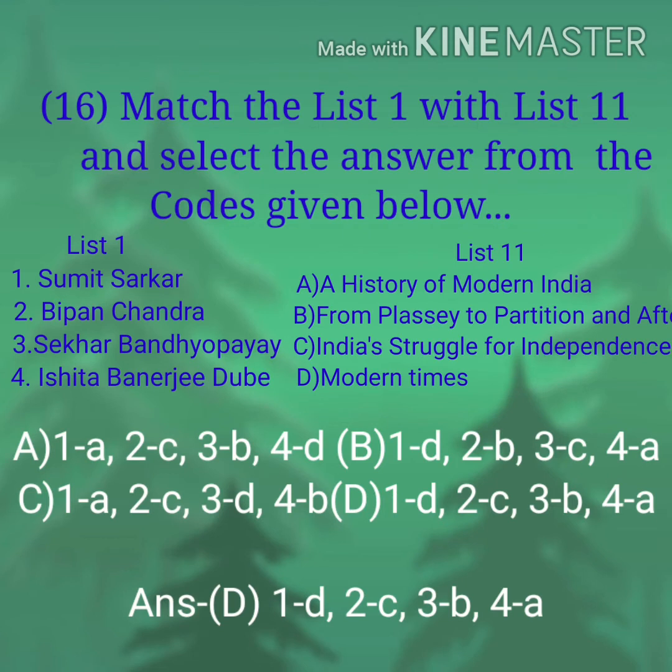Question number 16: Match List One with List Two and select the answer from the codes given below. List One: Sumit Sarkar, Bipin Chandra, Shekhar Bandyopadhyay, Ishita Banerjee-Dube. List Two: A History of Modern India, From Plassey to Partition and After, India's Struggle for Independence, Modern Times. Answer: Option D.